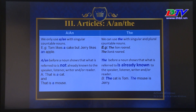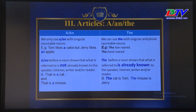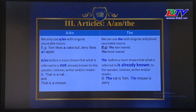Mời các em nhìn vào cách sử dụng a, an, the. Chúng ta sử dụng 'an' với danh từ số ít đếm được. Ví dụ: 'Tom likes a cake but Jerry likes an apple.' 'Cake' phát âm là phụ âm, chính vì thế chúng ta dùng 'a'. 'Apple' phát âm là nguyên âm, vậy chúng ta dùng 'an'. 'An' được sử dụng trước một danh từ để cho thấy rằng cái gì đó chưa được đề cập đến. Ví dụ: 'That is a cat and that is a mouse' — lần đầu tiên nói đến một con mèo và một con chuột. 'An' before noun shows that what is referred to is not already known to the speaker, listener, writer, and/or reader.